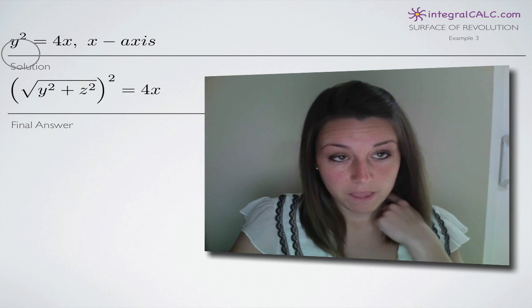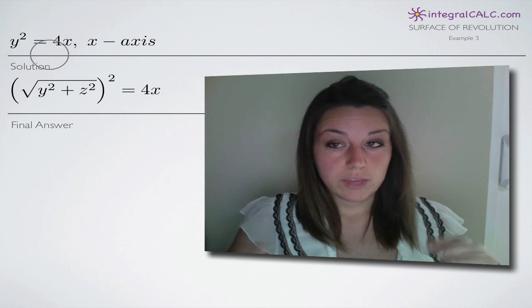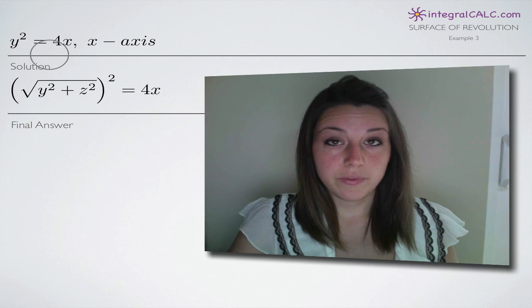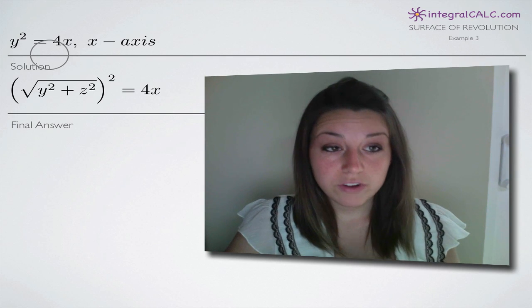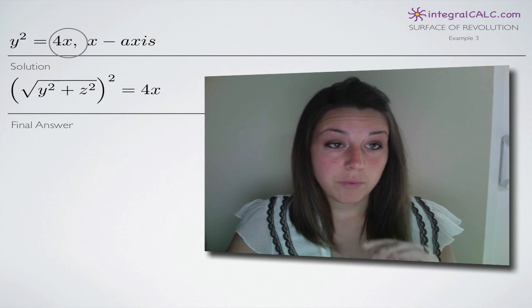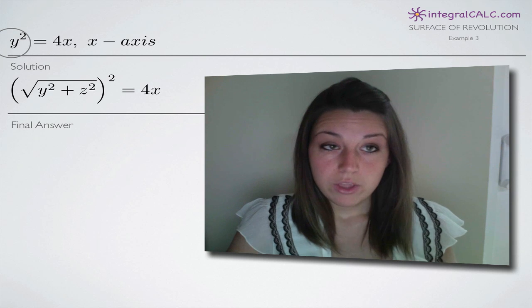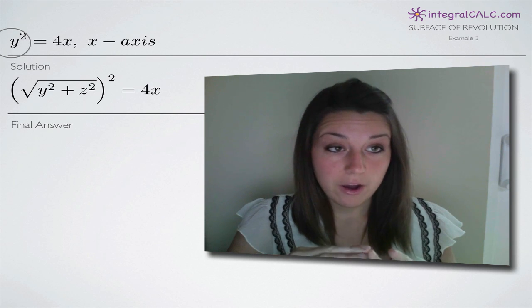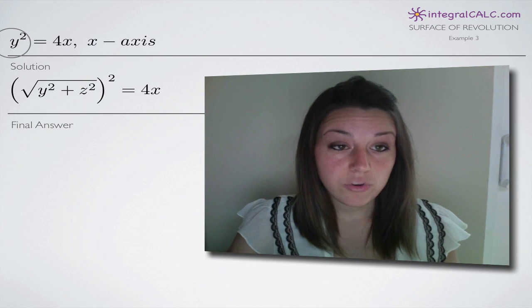Keep in mind that with surface of revolution problems, at the end of the problem, you always are going to need to end up with all three variables: x, y, and z. As you can see, we already have both x and y in our problem. So what we need to do is somehow get z into our solution.